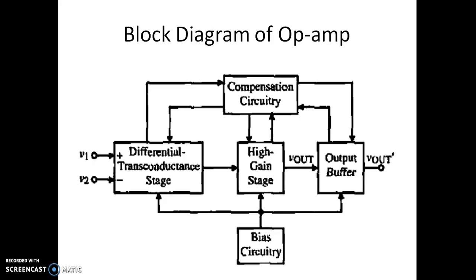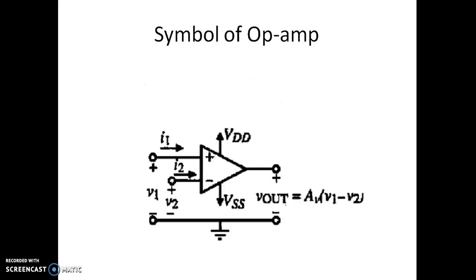In summary, the block diagram of an op-amp consists of a differential transconductance stage, where the applied input voltage is converted to current. That current is further amplified by a high gain intermediate stage. There is also a sourcing and sinking output buffer stage for lower output impedance. This is the symbol of an op-amp, which has two input terminals and one output terminal, with supply voltages VDD and VSS.